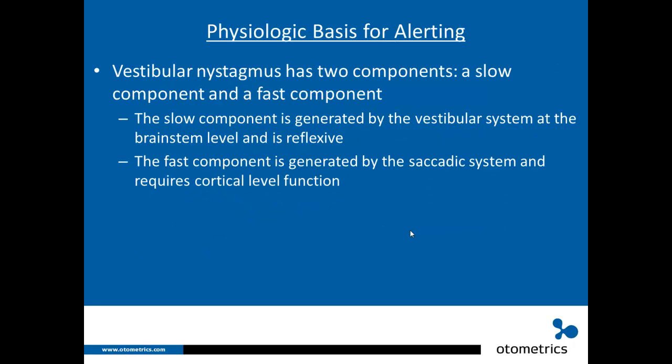Let's examine the physiologic basis for alerting in VNG. Vestibular nystagmus has two components. The slow component is generated by the vestibular system and it moves the eyes in the opposite direction of the actual or perceived head motion. This component is generated at the brainstem level and is reflexive. The vestibular nystagmus also has a fast component that's generated by the saccadic system. The role of the fast component is to reset the eyes toward the center when they approach the orbital limit. This component requires higher level cortical function and does not seem to be reflexive.